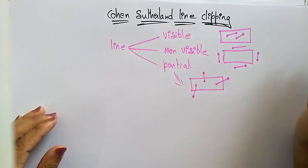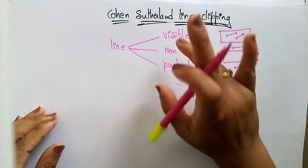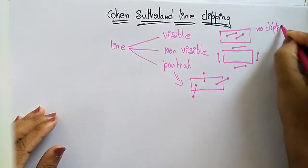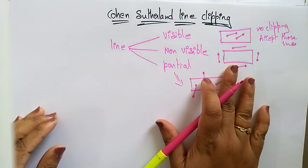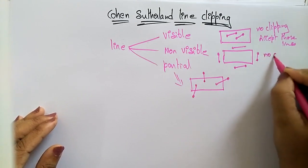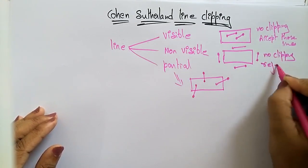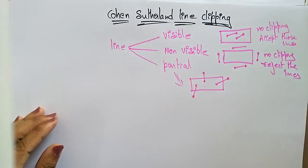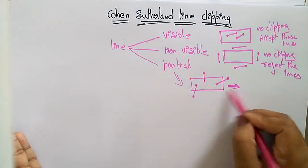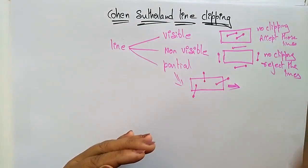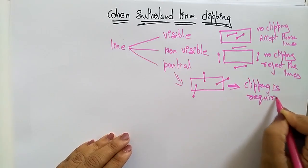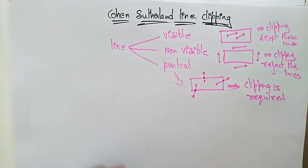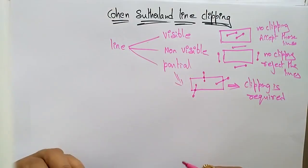If both endpoints are inside the clipping window, no clipping is required — you accept those lines. If both endpoints are outside the clipping window, no clipping is required but you reject those lines. If one point is inside and another is outside, clipping is required, and we use the intersection point to clip the line.